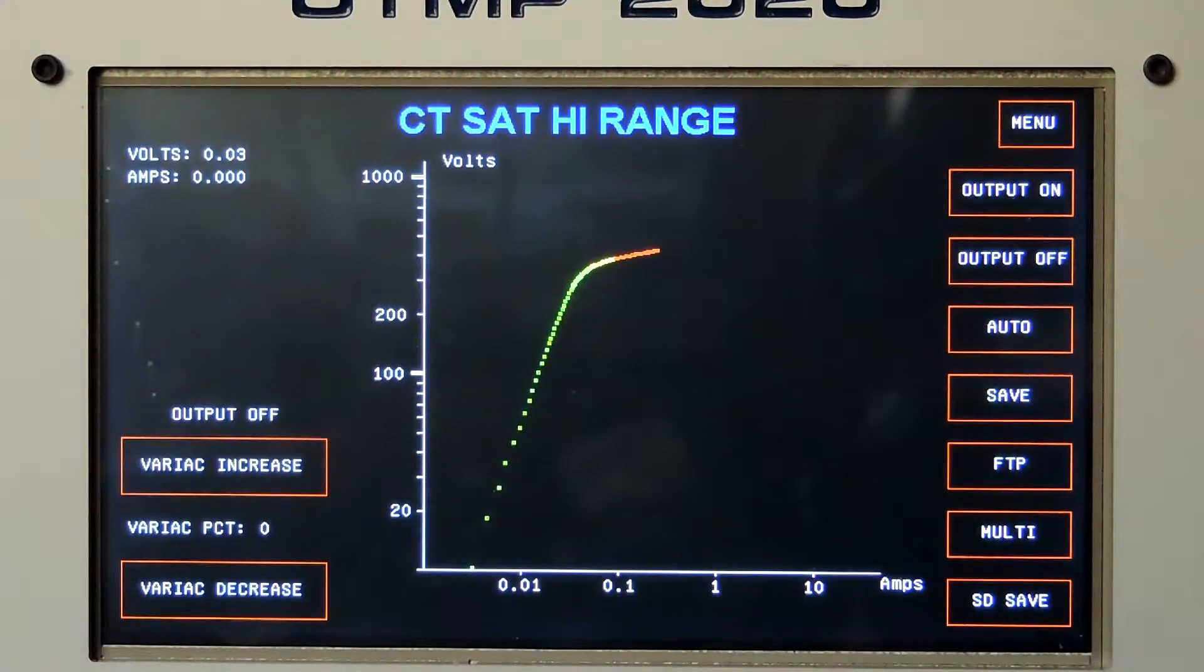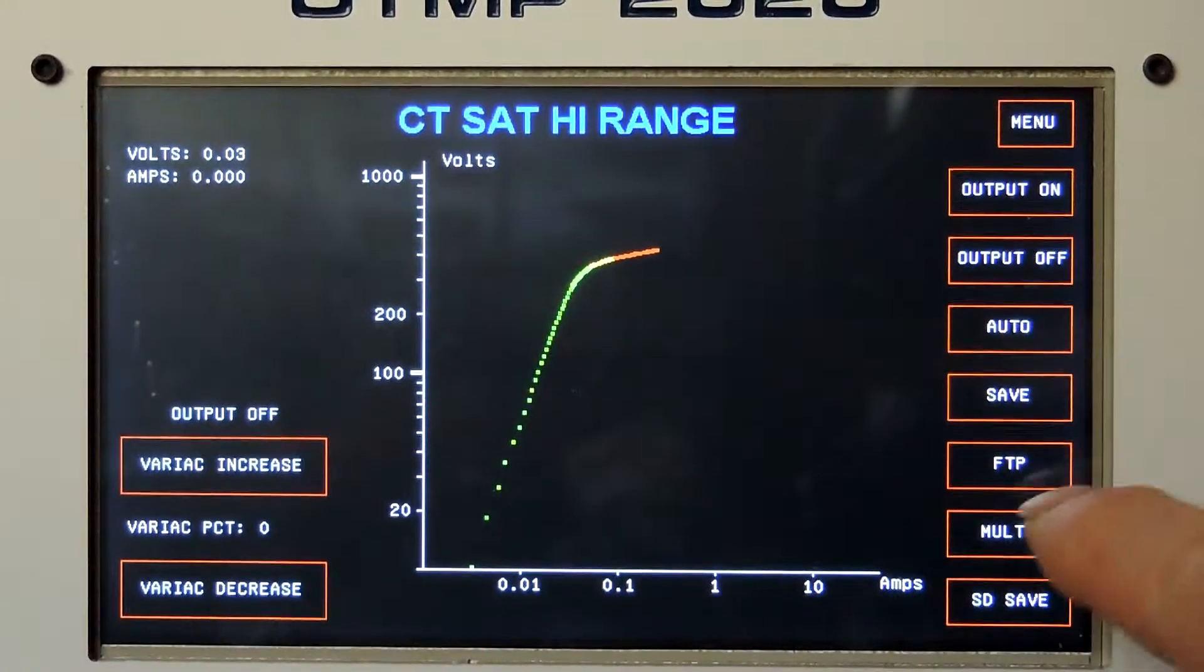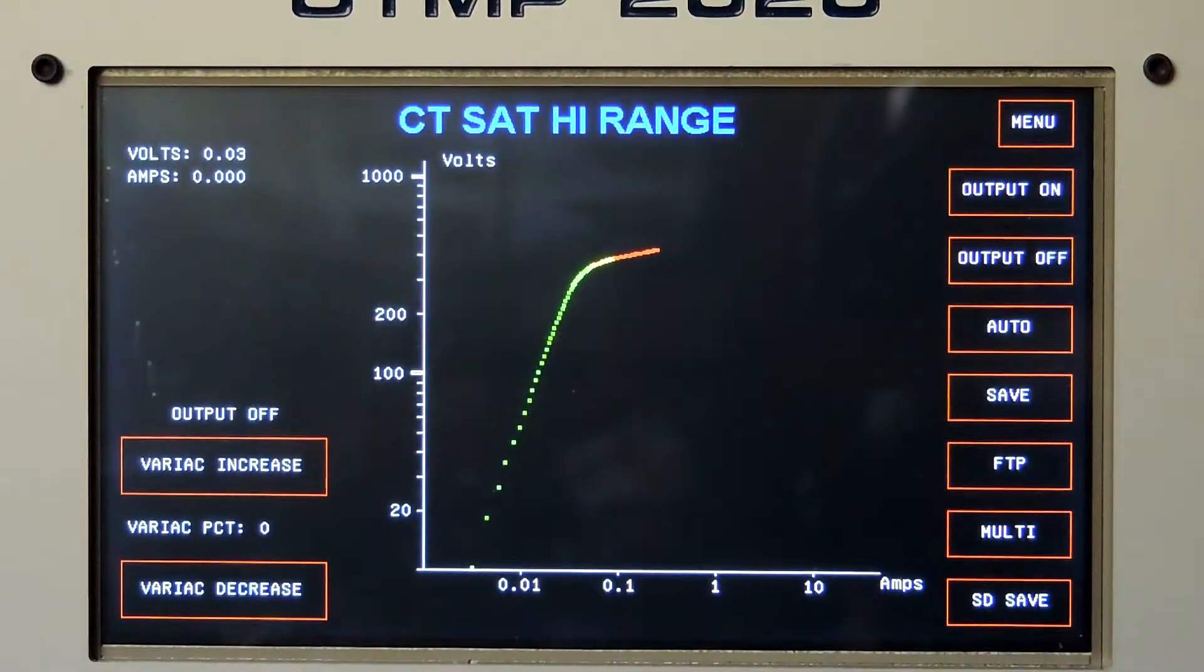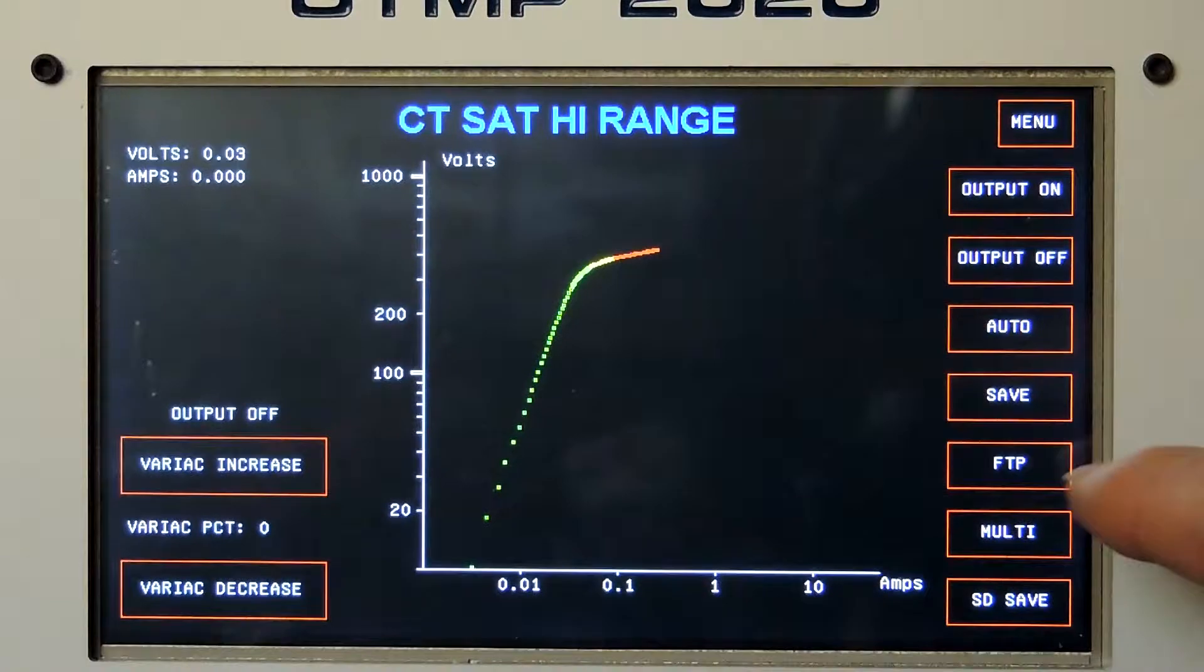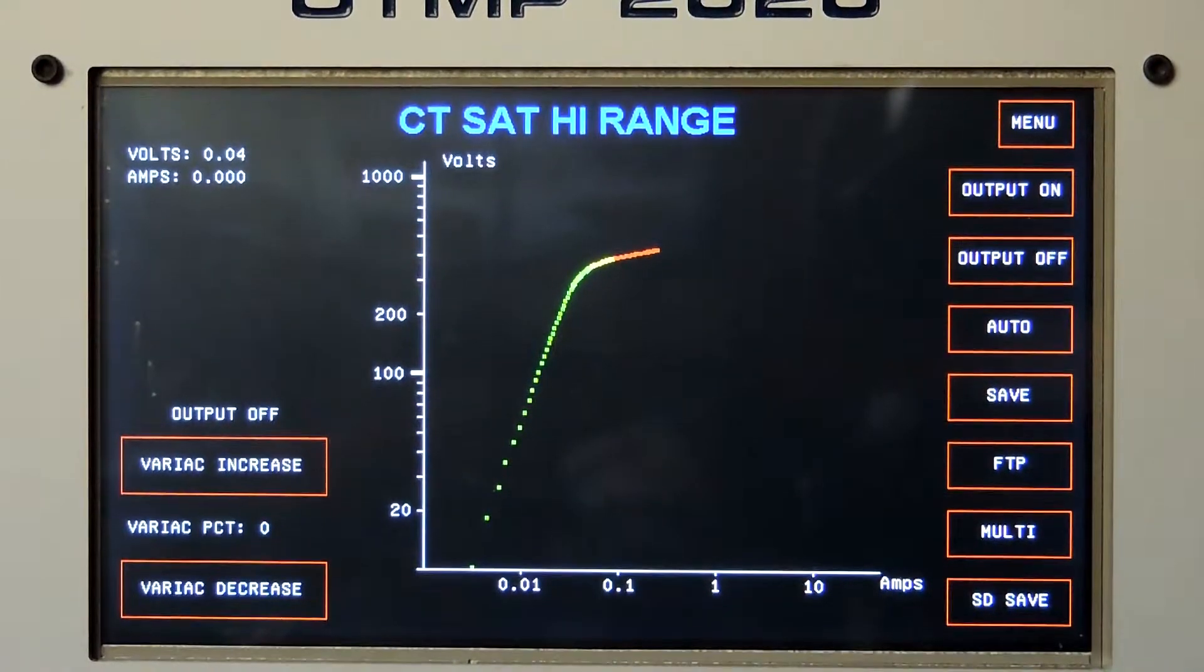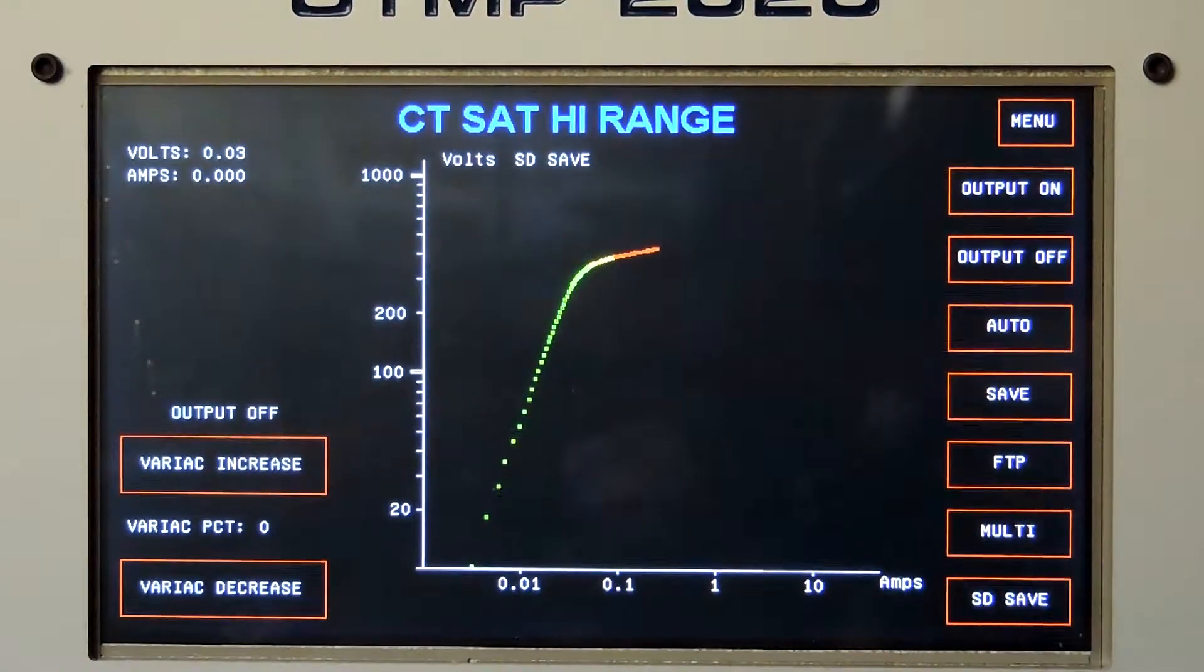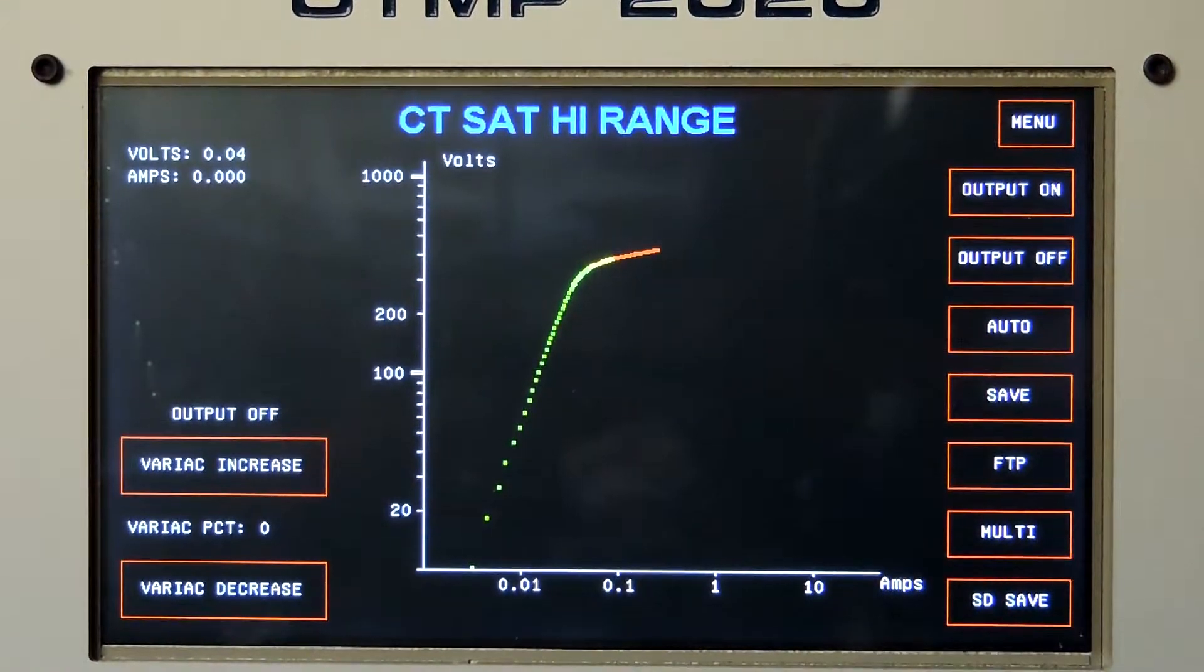I could press the save button and it would save it to the flash drive when installed. I could press the FTP button and if it detected the internet, it would upload it to the server. I could press SD save, which I'll do now, and it just saved it to the internal SD memory.